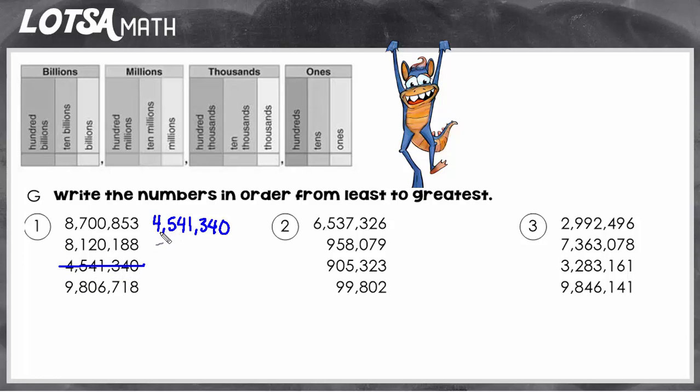Now I'm going to go to the next least out of eights and nine. Well, eight is less than nine. So I know the eight million numbers are going to be next in order and the nine million number's going to be last. But first I need to figure out which one of these is less than the other.